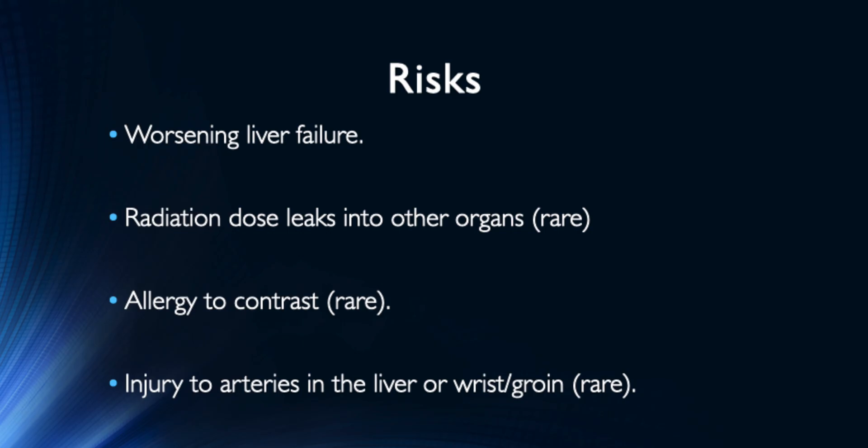The biggest risk to TARE is if the radiation leaks into the other organs during infusion. This occurs in less than one percent of cases if performed by an experienced operator. The other major risk is worsening liver failure. Some patients that undergo TARE have underlying liver disease or have been on chemotherapy that injured the liver. If too much of the liver is treated or too high of a dose is given, it can cause liver failure. Experience with TARE is important to reduce those complications.